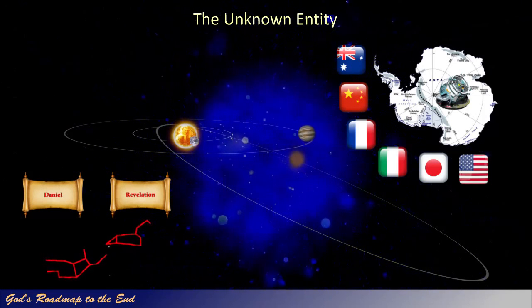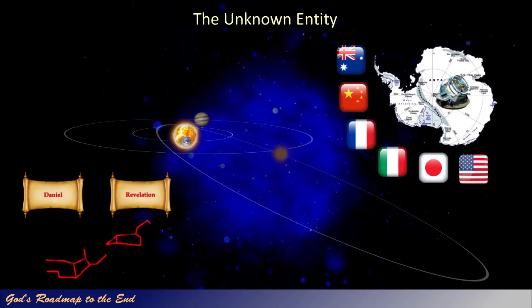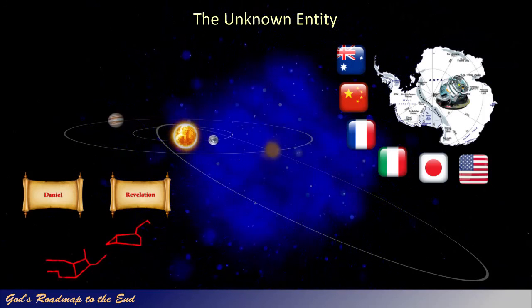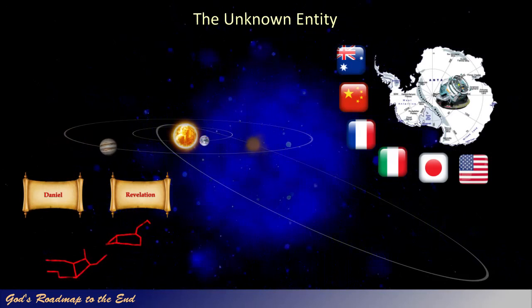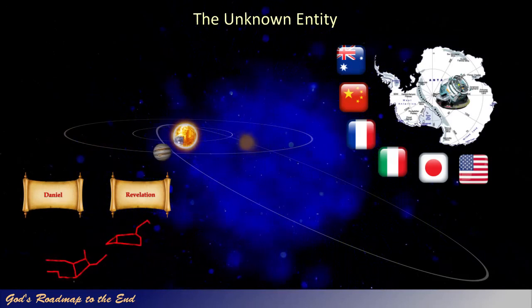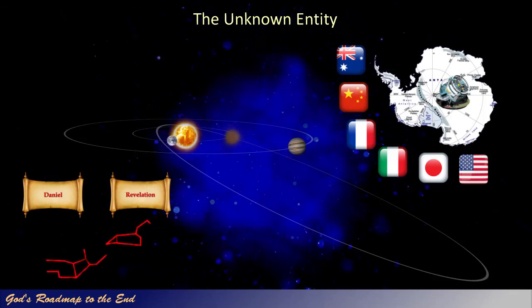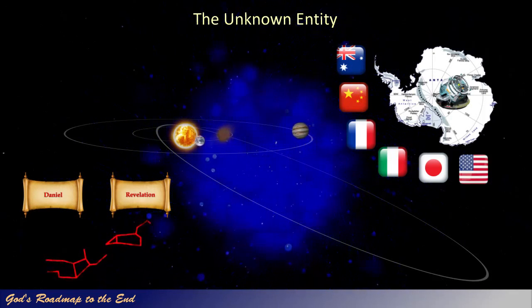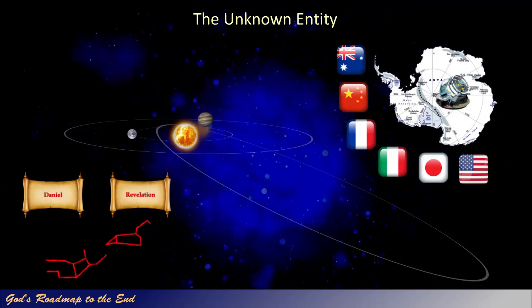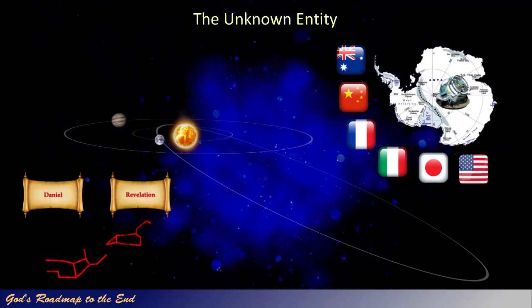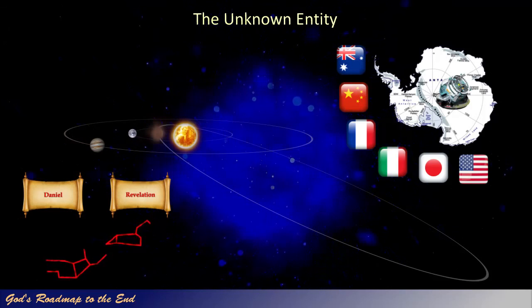If this object is indeed getting closer to the sun, as the articles would suggest, it would substantiate the possibility that this object could actually be orbiting the sun. Considering the observations of the influence of this object on the orbits of Uranus and Neptune, it is logical to understand that these planets will also have an equal counter-effect on the unknown entity's orbit. This means that the unknown celestial object could have a slightly different orbit for each cycle that it completes as it interacts with the other planets in the solar system. When we combine this information with what was recorded in Luke 23 and by four respected historians living in Yeshua's time, we know that this entity's orbital path around the sun intersected the space between the sun and the earth during Yeshua's crucifixion.